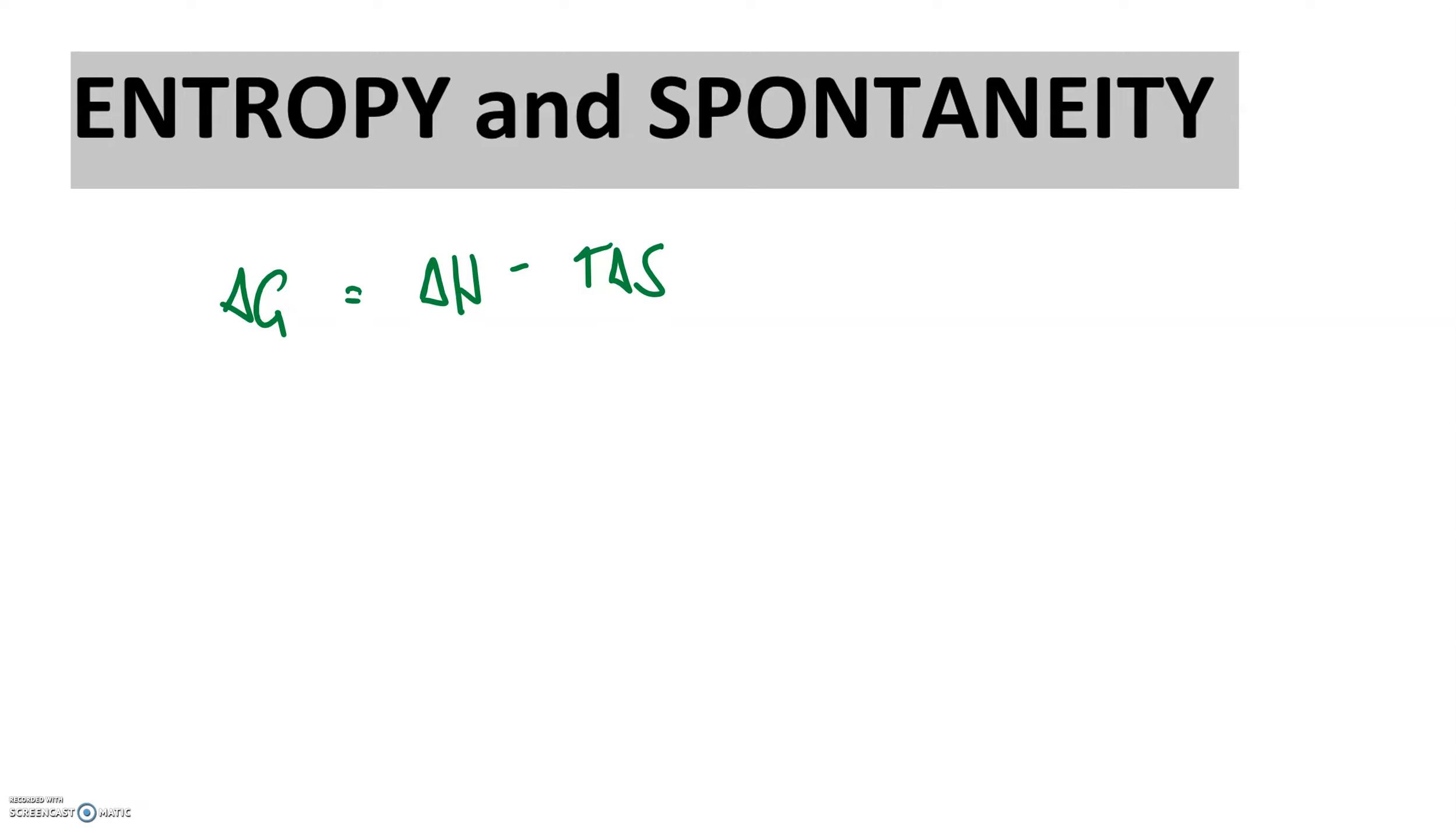Some of these terms are terms that we've also seen before. For example, this delta H, we're going to call this enthalpy. That's another fancy word for heat, and we usually measure this in joules. Obviously, whenever we see T, we know that's temperature, usually in kelvins. This guy, delta S, this is going to be something called entropy.